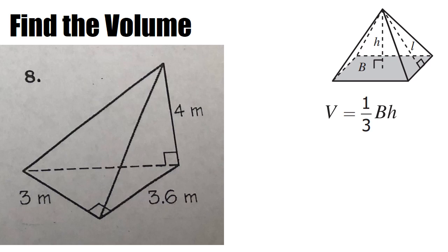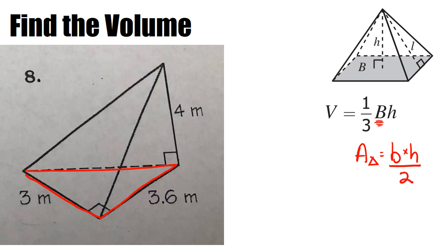We've got to find the base first. The way we do that is we know that our base is a triangle, so we can find the area of a triangle. The area of our triangle is going to be the base times the height, and then we're going to divide all that by 2.